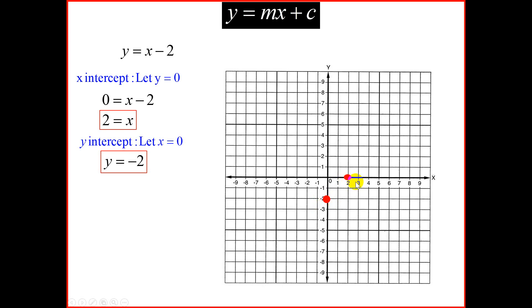We only need two dots, or two points, to draw a graph. Use your ruler and join those two points. We have our straight-line graph, which is y equal to x minus 2.